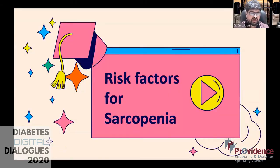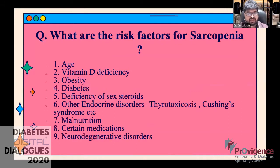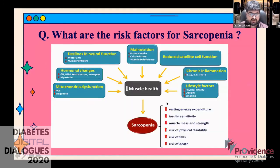What are the risk factors for sarcopenia? Age is the biggest risk factor, followed by vitamin D deficiency, obesity, diabetes, deficiency of sex steroids, other endocrine disorders like thyrotoxicosis and Cushing's, malnutrition — which is very common in India — certain medications, and neurodegenerative disorders.